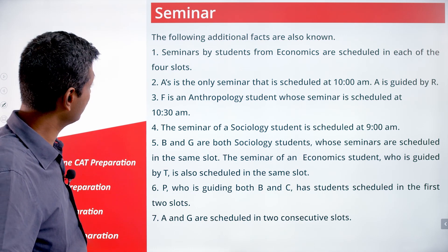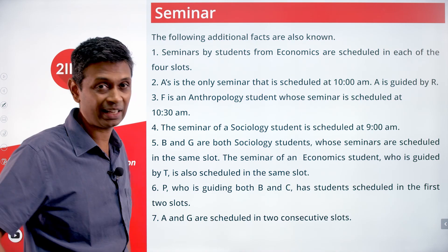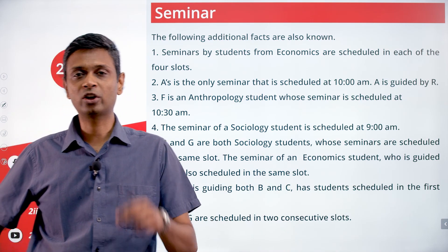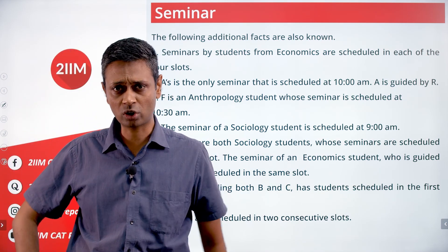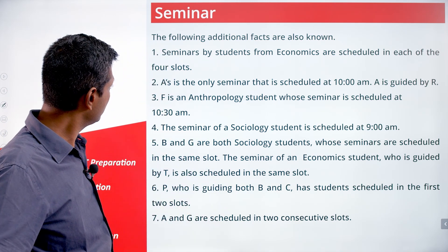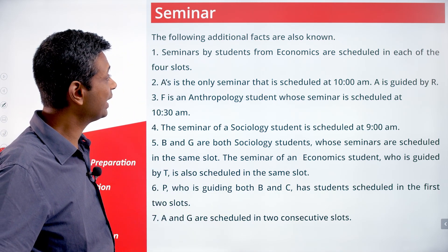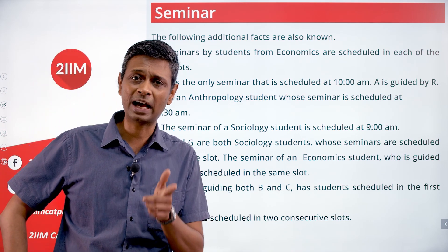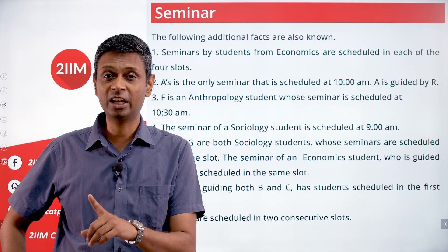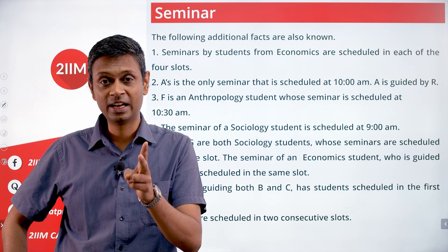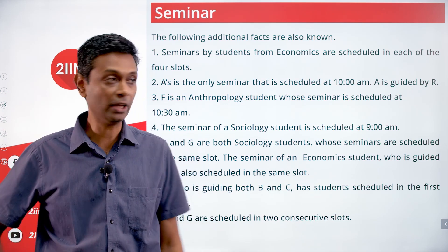Economics seminars are scheduled in each of the four slots. A is the only seminar scheduled for 10am, and A is guided by R. So at 10am there is one seminar — that is A. A is an economics student guided by R.